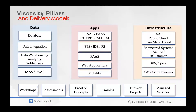Viscosity focuses on three pillars: Data—from database to data integration and analytics; Applications—running the full stack including EBS, JD Edwards, PeopleSoft, SAS, and integration; and Infrastructure—covering public cloud, private cloud, and engineered systems. Key service offerings include cloud clustering, data warehousing, high availability, managed services, and performance tuning.